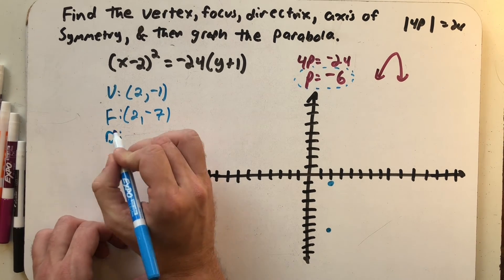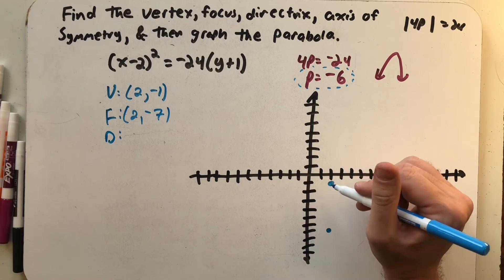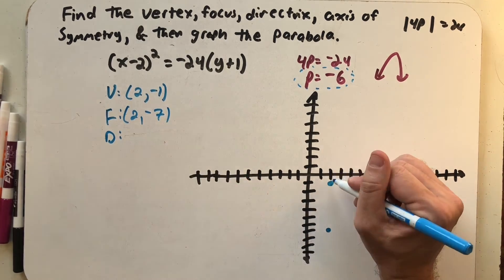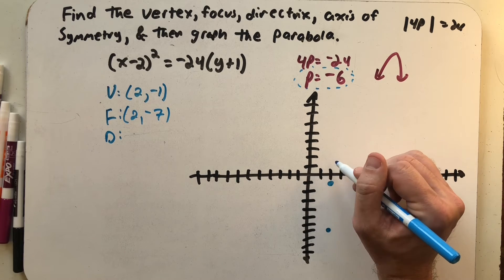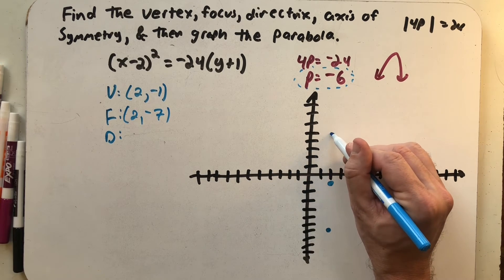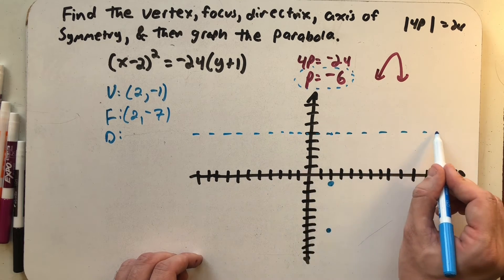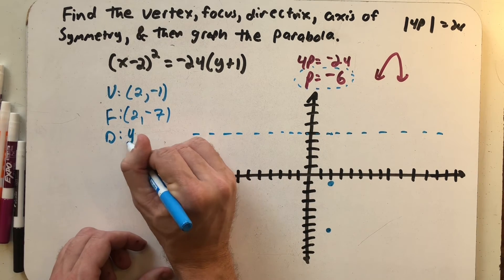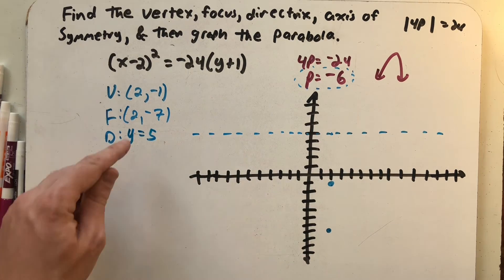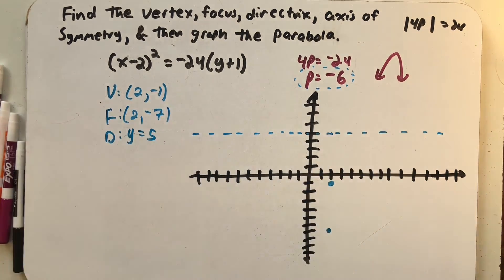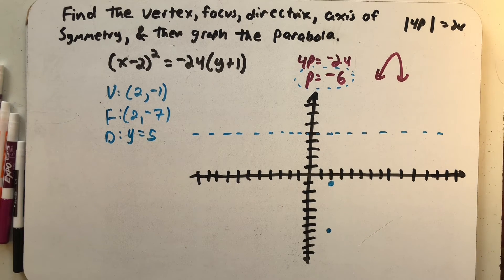My directrix here is going to be a horizontal line going the other direction that same distance. So now instead of down 6, up 6. And so that's at y = 5. Here what I'm doing is taking that -1 and subtracting -6, I get 5.